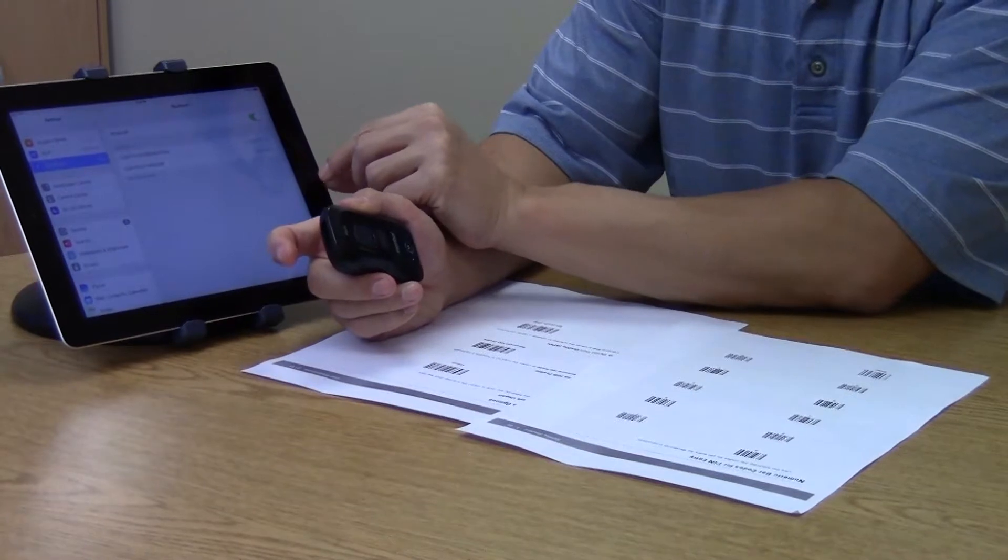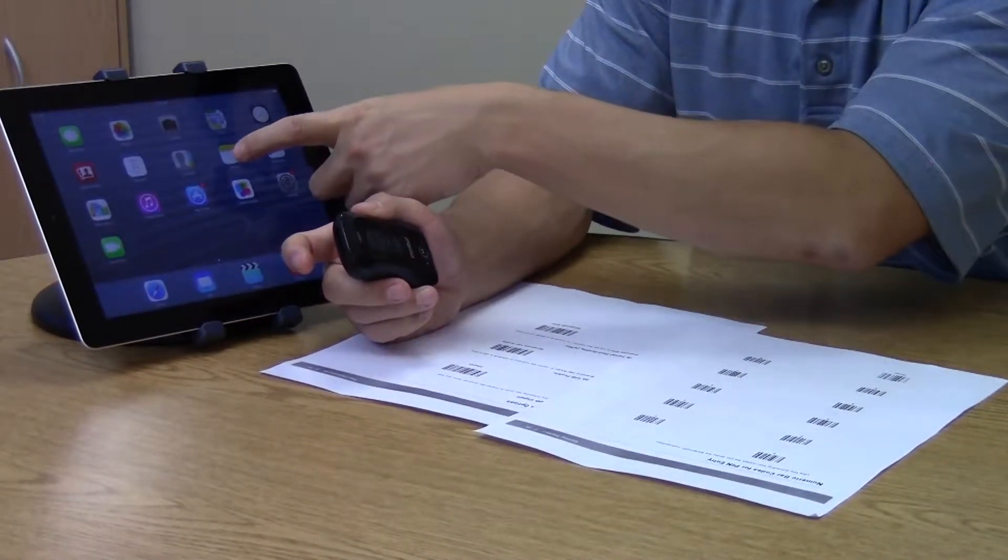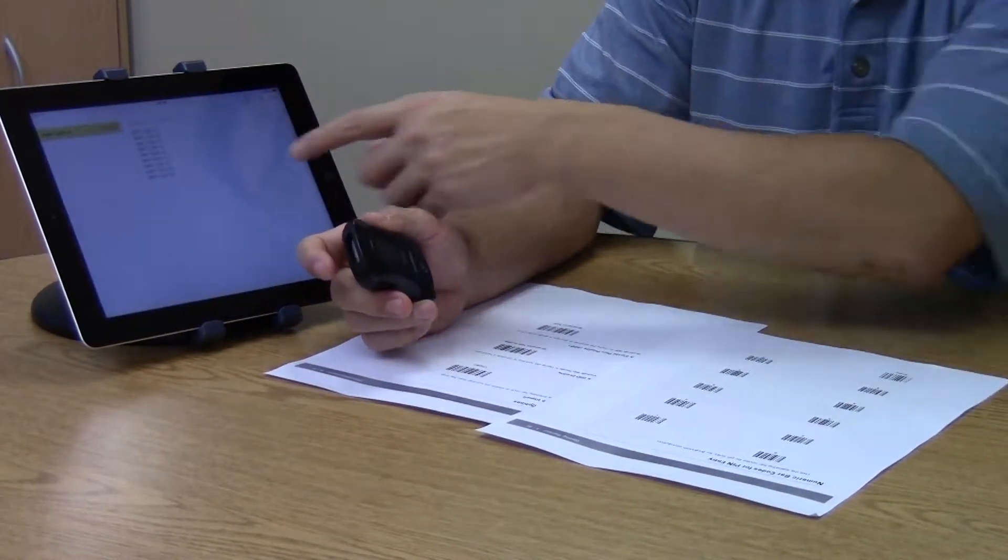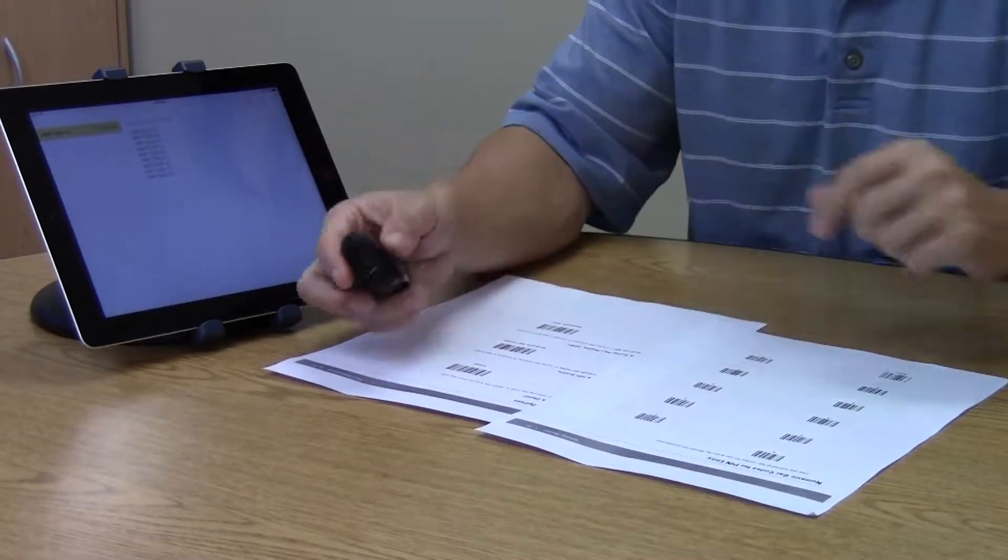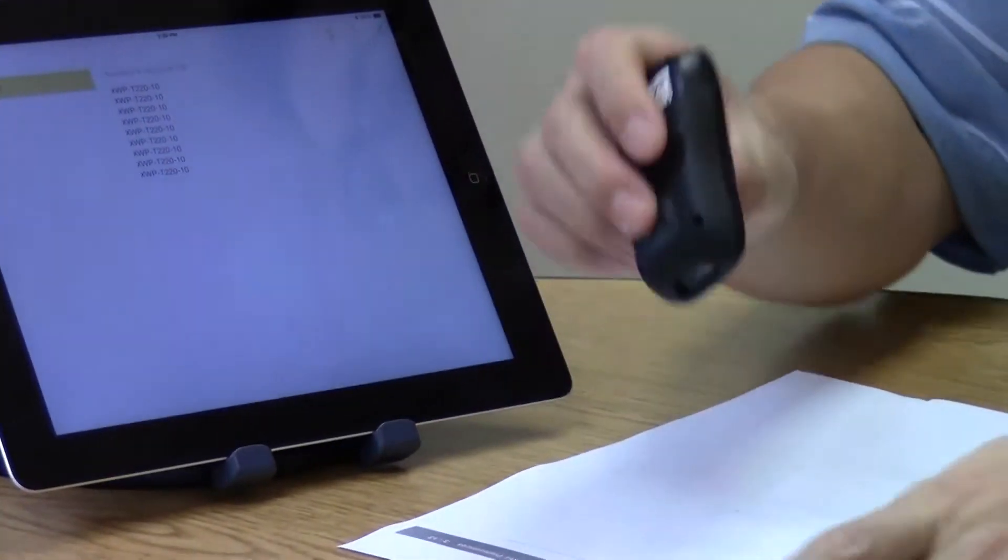So you can use it like a human interface device or HID device. In Notepad, you can scan barcodes.